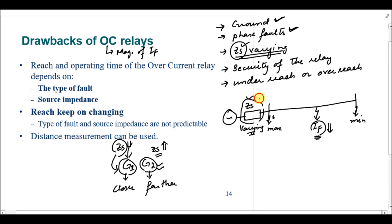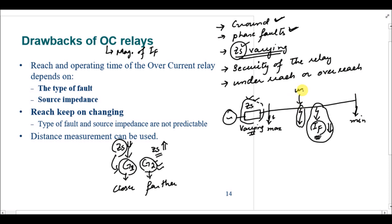When Generator 2 is feeding and the fault current is smaller, the relay will perceive the fault current as corresponding to a location further away. So the relay will think the fault has occurred at a point beyond where it actually is. This is the underreach condition of the relay.